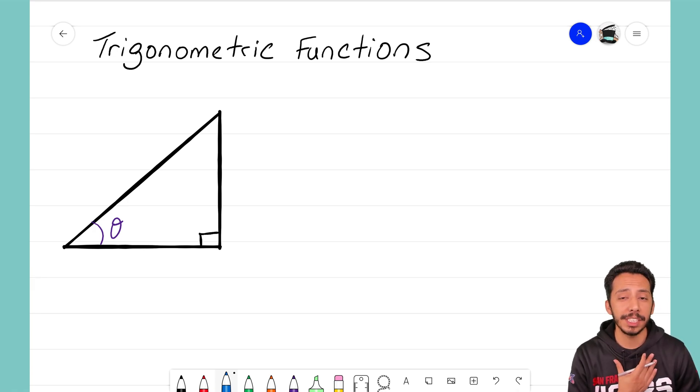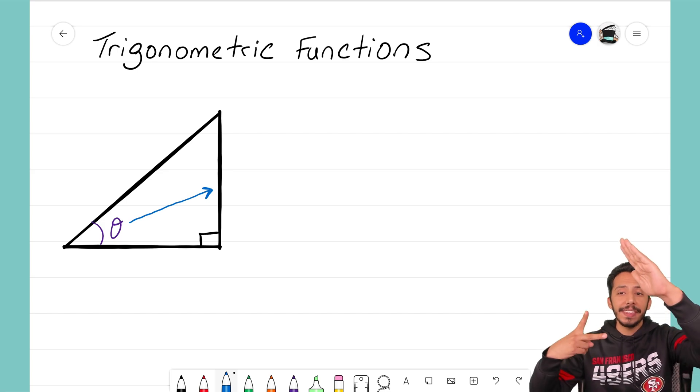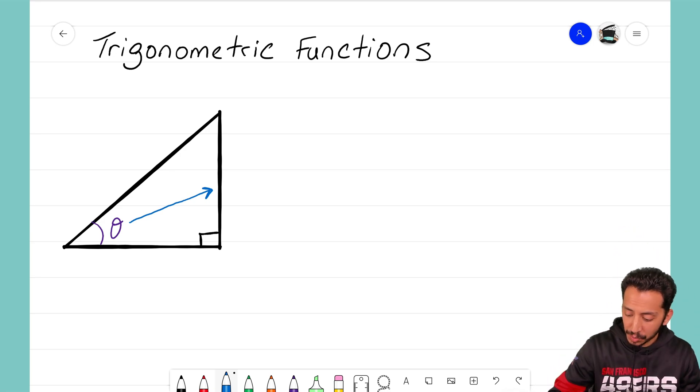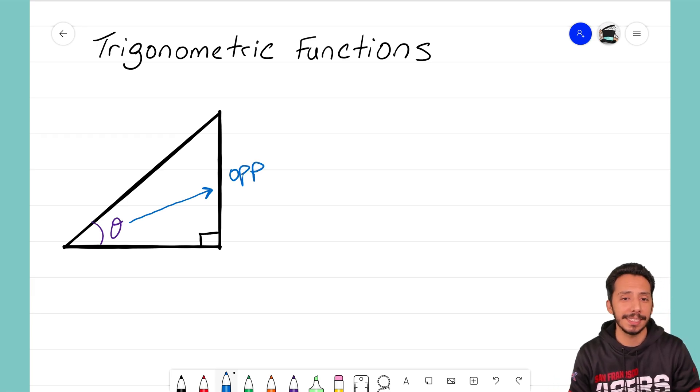Once you've identified your reference angle, the next step that I always do is identify my opposite side. To find the opposite side, I start at my reference angle and draw a line away from that reference angle until I get to the side that is directly opposite of that angle. If it helps you to think about it this way, I'm looking at the side that the angle opens up to. That angle of theta is opening up to that side there. That's what we refer to as our opposite side, or OPP.